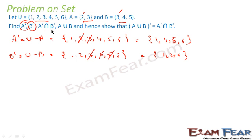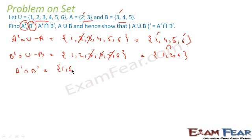Now find A complement intersection B complement. A complement is {1, 4, 5, 6} and B complement is {1, 2, 6}. We need the common elements. 1 is common. 4 is in A complement but not in B complement. 5 is in A complement but not in B complement. 6 is common. So A complement intersection B complement is {1, 6}.